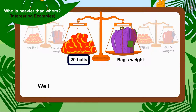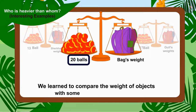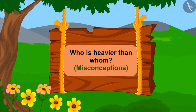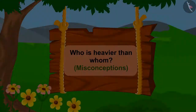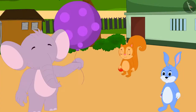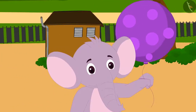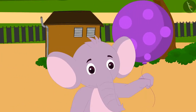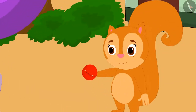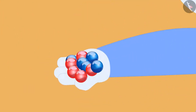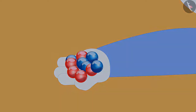Hello children! In the previous video we learned to compare the weight of objects with some interesting examples. In this video we shall learn about misconceptions related to the concept of weight. Chanda, Bunny, and Appu have come to play in the park. Appu has brought a big balloon, Chanda has brought a cricket ball, and Bunny brought ten marbles.